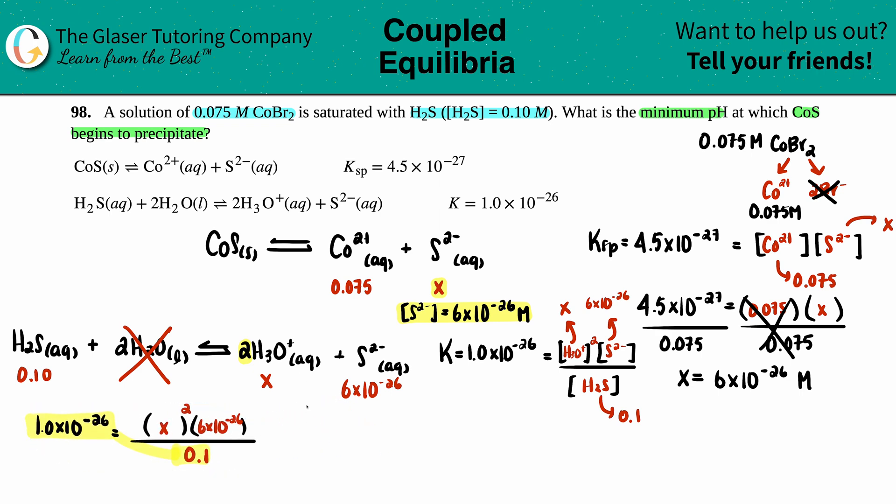Let's cross multiply. This times this gives 1.0 times 10 to the negative 27 equals 6 times 10 to the negative 26 x squared. Divide both sides by 6 times 10 to the negative 26. We're left with x squared equals 1 times 10 to the negative 27 divided by 6 times 10 to the negative 26, which is 0.0167. Now take the square root because we have to undo that square. The square root of 0.0167 gives x equals 0.1292 molarity.